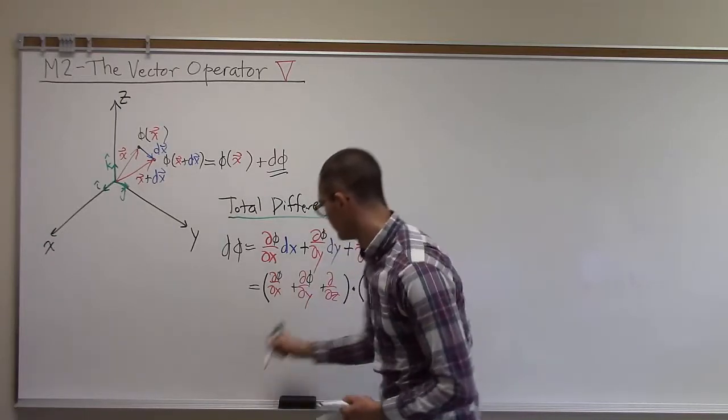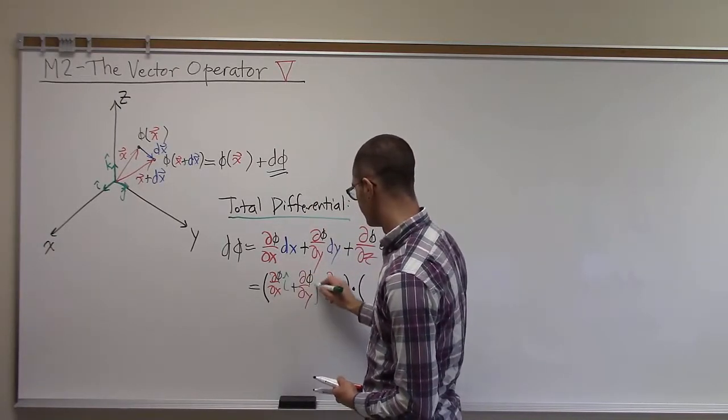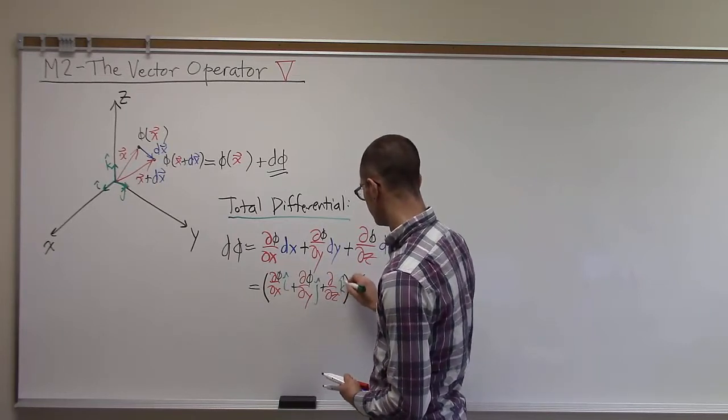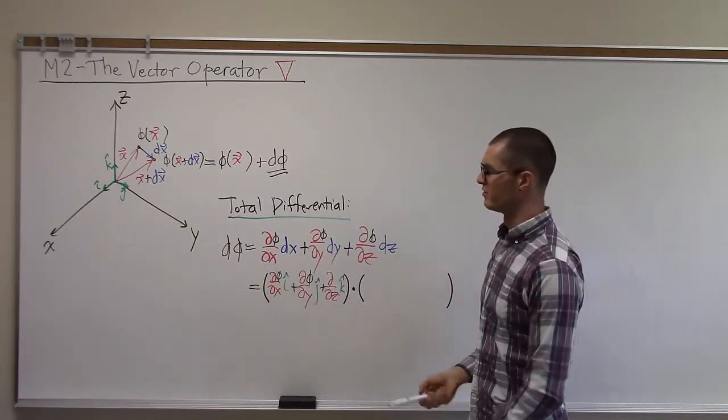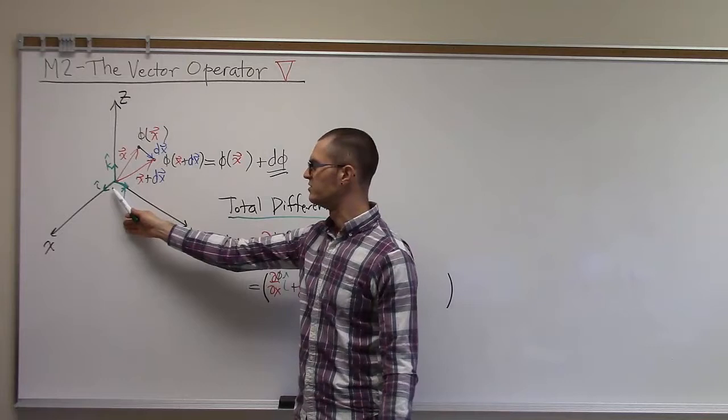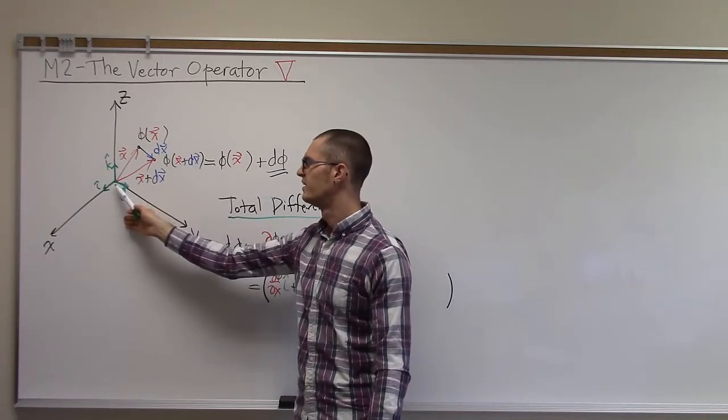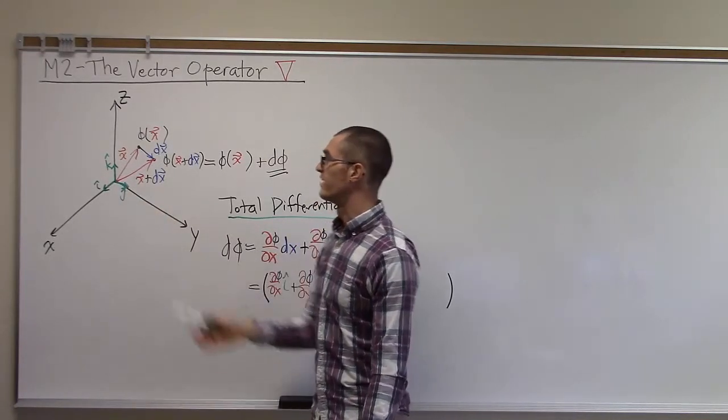And then each of those components is multiplied by the unit vector in that direction. So just remember back to our first video sequence where we define these unit vectors i, j, and k in the directions of x, y, and z.